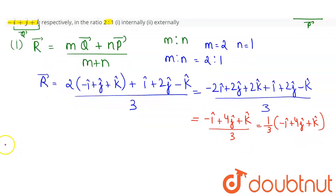Now for externally, R vector can be determined as M into Q vector minus N into P vector divided by M minus N. So this will be M minus N. As M is 2 and N is 1, and Q vector is, let us substitute these values.